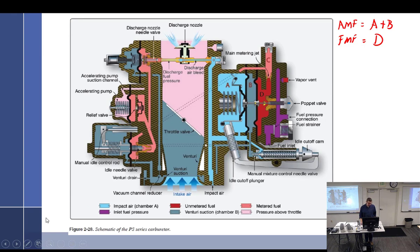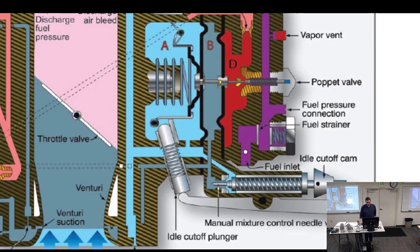The idle circuit. If I want to lean this out a little bit, there is a plunger that creates a vent. If I pull the mixture back a little bit, it pulls this needle out and creates a bleed or a leak. If A is impact pressure and B is suction, and I lose a little bit of A or a little bit of suction, the poppet tends to close. The way I bleed off pressure or lose suction is to connect A and B and open this up.